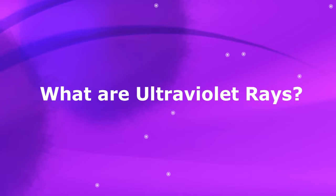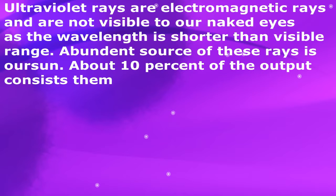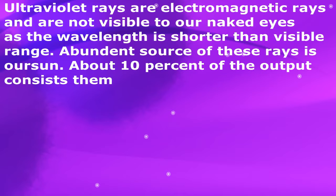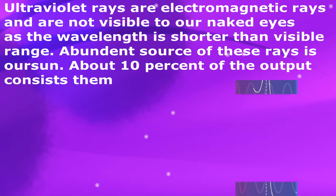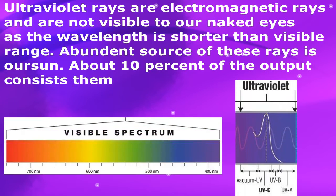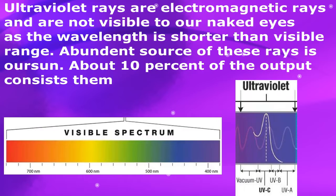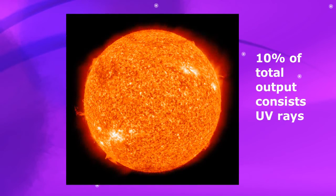Before I go in depth, let me tell you what ultraviolet rays are. Ultraviolet rays are electromagnetic rays and are not visible to our naked eye because their wavelength is shorter than visible light. The abundant source of these rays is our sun, and about 10% of the total output of sun rays consists of them.